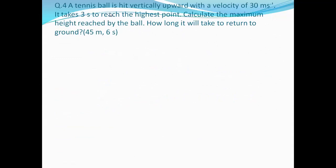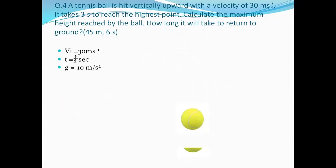Moving on to the fourth question: a tennis ball is thrown vertically upwards with a velocity of 30 m/s. It takes 3 seconds to reach the highest point. Find the maximum height reached and how long it will take to return to ground. The expected answers are 45 meters and 6 seconds total time.